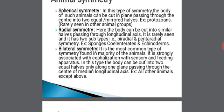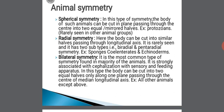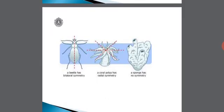Bilateral symmetry is the most common type found in the majority of animals. It is strongly associated with cephalization, that is, the formation of a true head with sensory and feeding apparatus. In this type, the body can be cut into two equal halves only along one plane passing through the center of the median longitudinal axis. Example: all other animals except those above. This slide clearly shows the different types of symmetry seen in different animals.